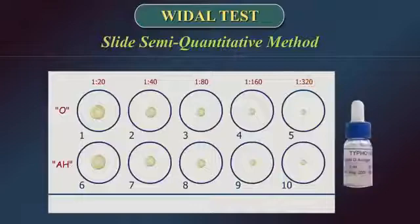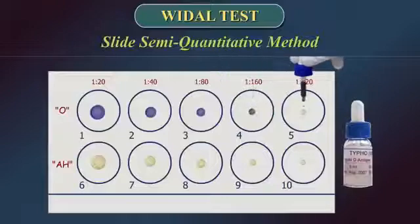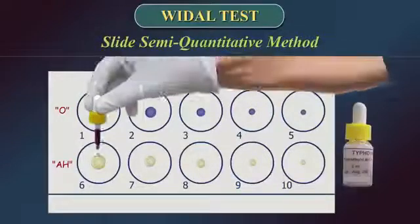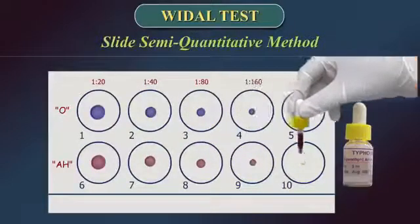Add to each reaction circle a drop of the antigen which showed agglutination with a test sample in the screening method. In our demonstration, it will be O and AH antigens.